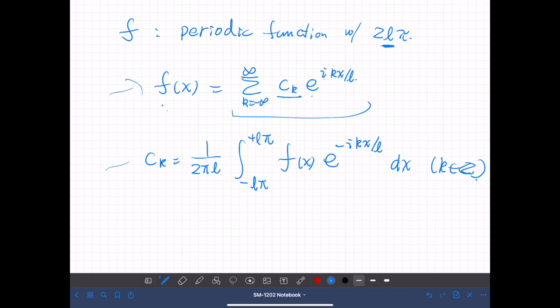So all these hold because just by transforming the variables from x to Lx, then all these will be just an ordinary Fourier series of a periodic function with period of 2π. So they are all the same. And all the results we have obtained so far are also applicable to these functions, periodic functions with period of 2Lπ.